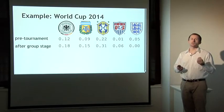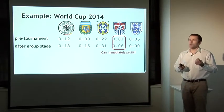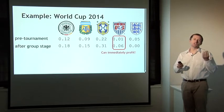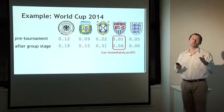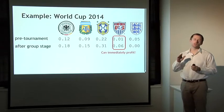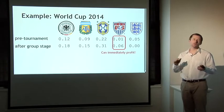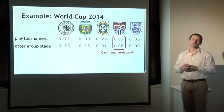Here's the key insight — the most important thing to understand about prediction markets. If you had bought US shares at the beginning when they were selling for one cent, you could sell them immediately after the group stage for six cents. You wouldn't have to wait till the end of the tournament. You could immediately profit not from the fact that the US won the whole tournament — because they didn't — but just from the fact that people's belief that they had a chance to win went up after their strong performance in the group stage.